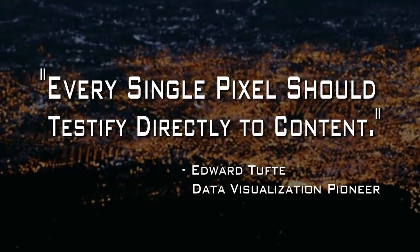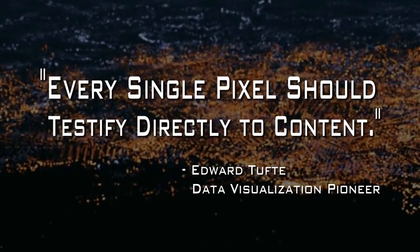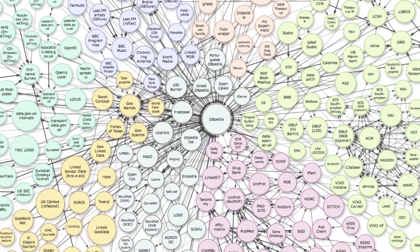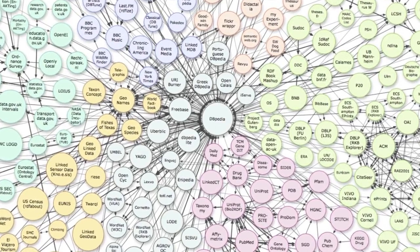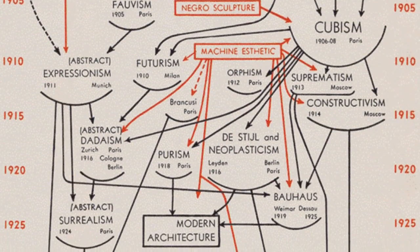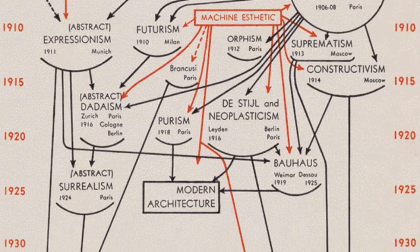In the arrangement of visualization, every single pixel should testify directly to content. As Jony Ive, the great Apple designer said, we spend most of our time getting design out of the way. It's got to get out of the way because it's about the relationship of the viewer and how they reason about the content.